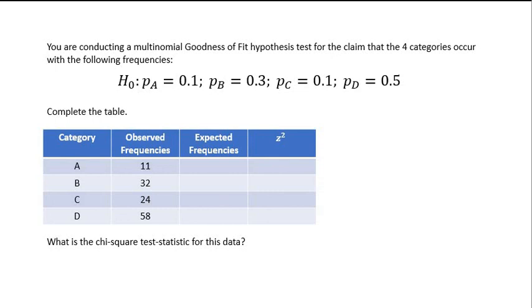Goodness-of-fit test. You are conducting a multinomial goodness-of-fit hypothesis test for the claim that four categories occur with the following frequency. So the null hypothesis is that in the population, 10% are category A, 30% are category B, 10% are category C, and 50% are category D. And what we have is we have some observed frequencies here from each category.